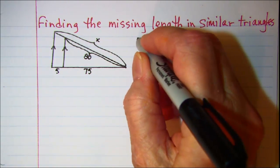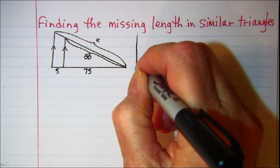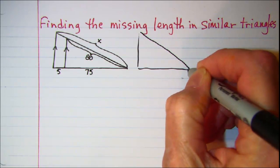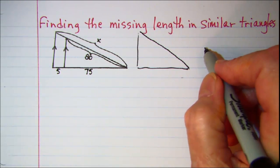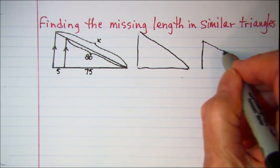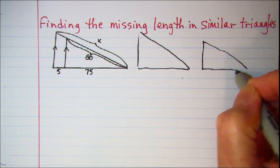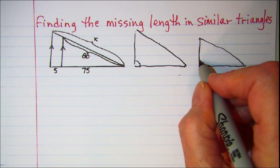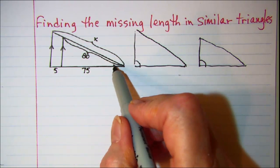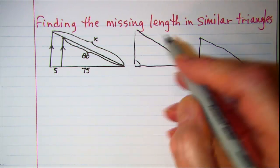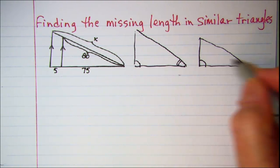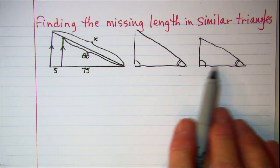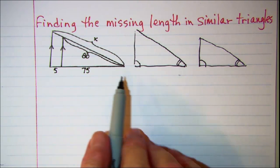So let's separate our two triangles — our bigger one here and then our smaller one. We know that this angle is congruent to this angle, and we know that they both have this angle in common, so those two angles are congruent. So we have similar triangles, so let's put our measurements in.